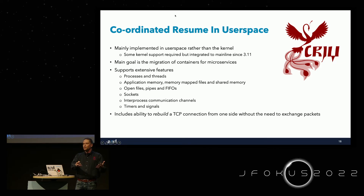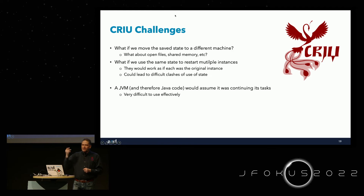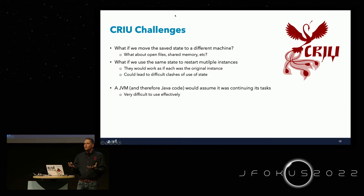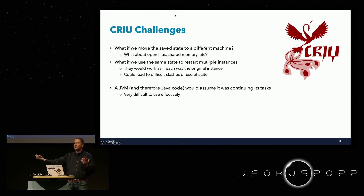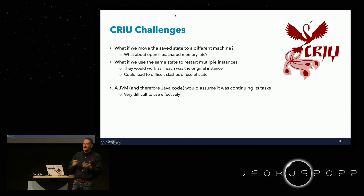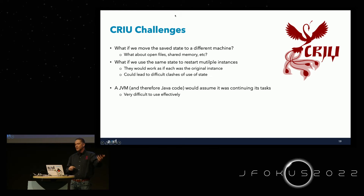This sounds great — why not simply apply CRIU to a Java application? The JVM is just an application running in user space. But there are challenges: if we move state to a different machine, what happens to open files and open network connections? An open file on one machine won't have the same connection on a new machine. Shared memory across machines is difficult. Even on the same machine, a gap between stopping and restarting could cause file changes, network connection timeouts, and many things that become very difficult to handle with a simple snapshot.